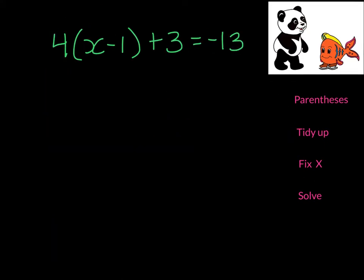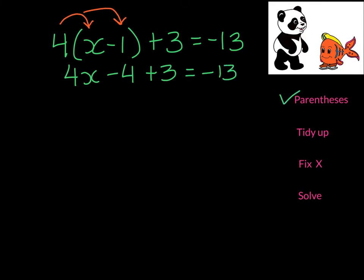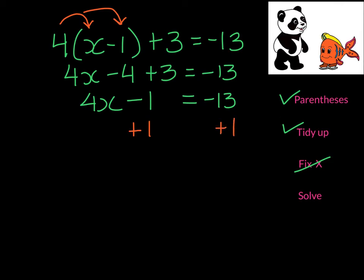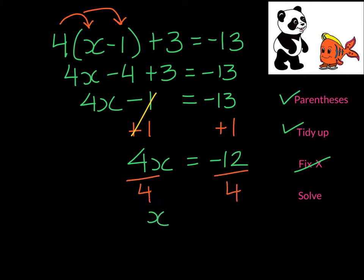This is our next example. We have parentheses here, so we have to distribute. We multiply 4 times X and 4 times negative 1. 4 times X gives us 4X, and 4 times negative 1 gives me negative 4. The rest of the equation stays the way it is, so we've gotten rid of the parentheses. Now we do have to tidy up, because we have negative 4 and positive 3 — we need to simplify this, which becomes negative 1. We don't have to fix X because there are not X's on both sides. So now we can solve using inverse operations. We're left with 4X equals negative 12, then we divide by 4, and X equals negative 3.